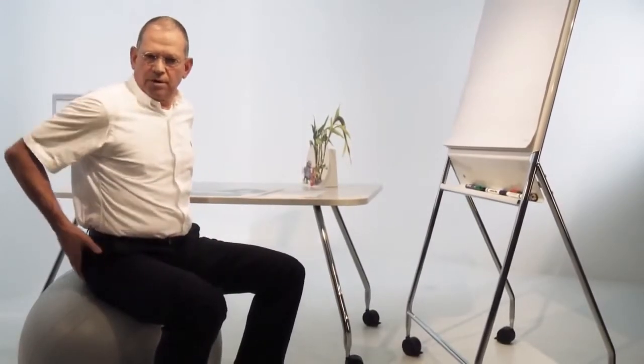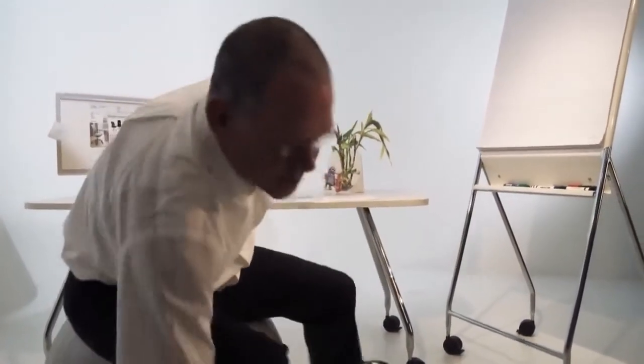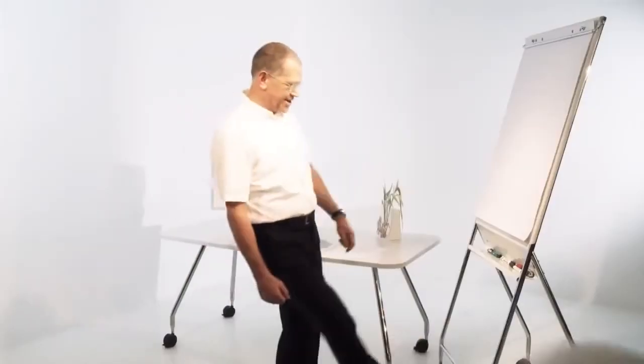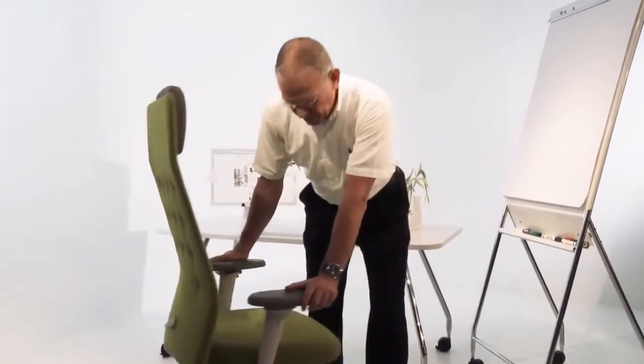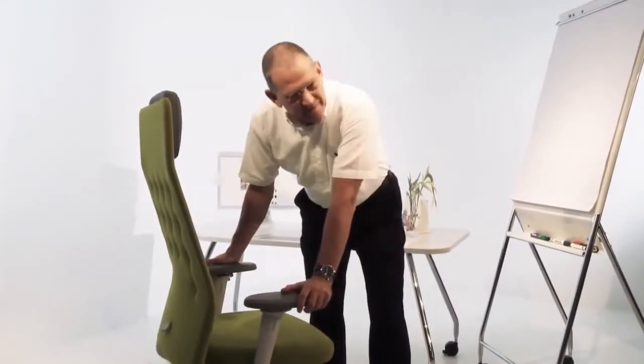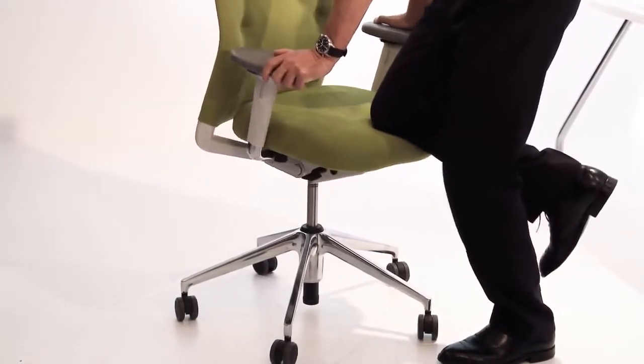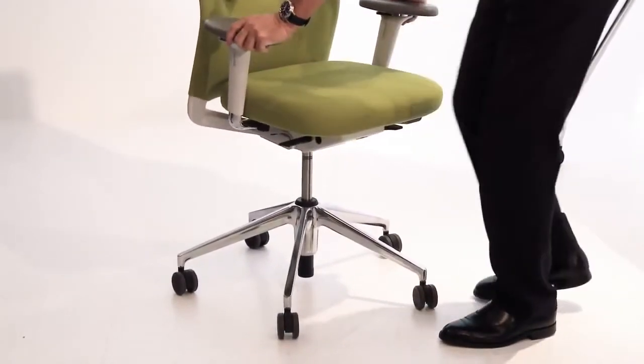Ganz einfache Begründung: weil sich mein Körpergewicht auf die Beine und den Rücken verteilt. Das Entscheidende ist, dass der Gymnastikball als Stuhl im Büro nicht in Frage kommt, weil er natürlich auch Gefahren mit sich bringt – zum Beispiel herunterfallen. Der Ball hat seine Schuldigkeit getan. Aber das ist auch okay so, denn das Beste, nämlich die Bewegung aus dem Ball, haben wir hier in die Flow-Motion-Mechanik des ID-Chair integriert.